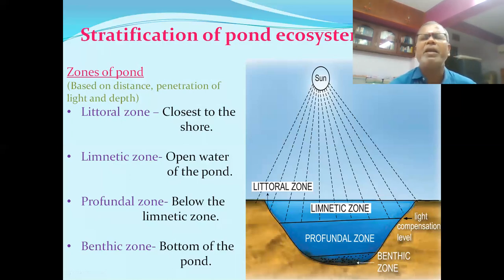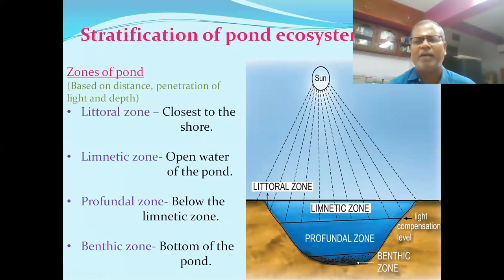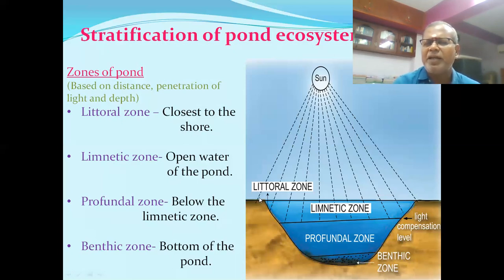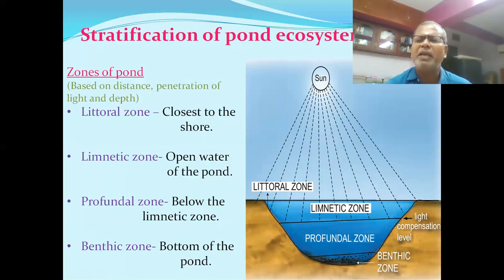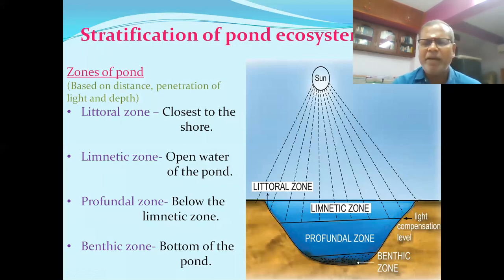The limnetic zone has phytoplankton as the primary producers in the pond ecosystem. There are also free-floating hydrophytes. Producers make the primary productivity and biomass production higher here. In the limnetic zone, consumers are more in number — primary, secondary, and tertiary consumers.